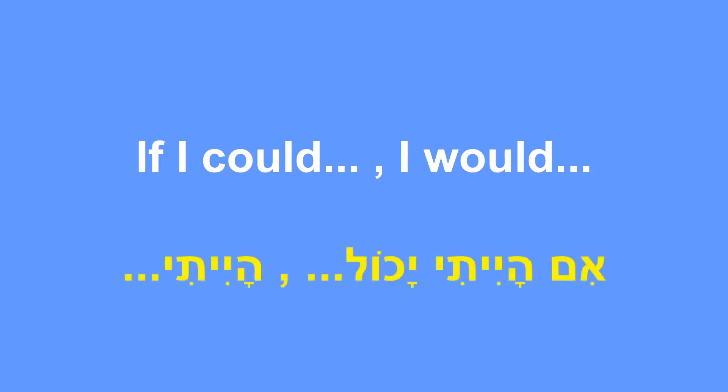Hello everybody, and in today's Hebrew lesson we're going to continue to talk about 'I would.' In this lesson we'll learn the sentence structure of 'if I could, I would.' I strongly suggest you watch the previous video because in it I started explaining how this grammatical structure functions in Hebrew. In Hebrew it will be something like 'im haiti echol, haiti' and then I continue my statement. Let's see a few examples.